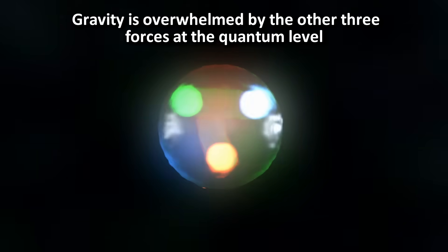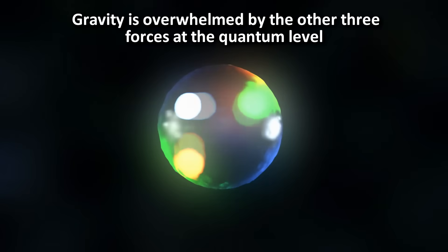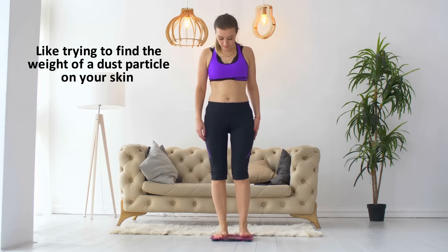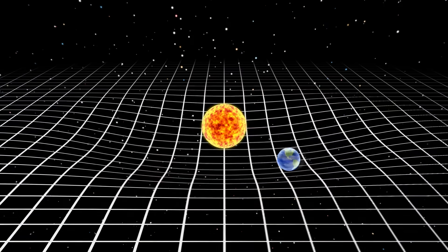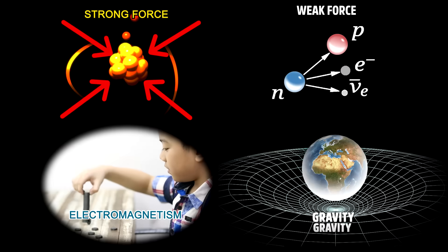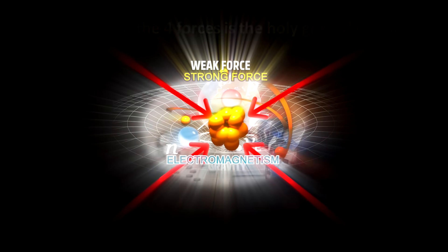How does all this apply to gravity? Since it has infinite range, its theoretical carrier particle, the graviton, should also have no mass. The reason we don't have a quantum gravity theory is because at quantum scales, gravity is completely overwhelmed by the other three forces — it would be like trying to figure out the weight of a dust particle on your skin while weighing yourself on a scale. For now, gravity is treated almost purely in geometrical terms using general relativity. But at some fundamental level, all four forces should be one and the same.